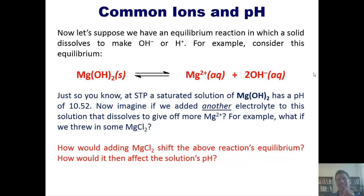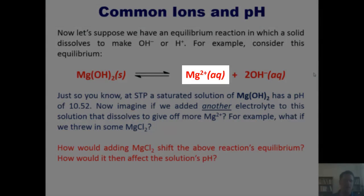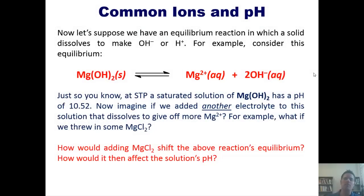Once again, magnesium chloride would dissipate to give a bunch of Mg2+, magnesium cation. That would feed back into this reaction and drive the reaction to the left. And in order to drive it to the left, what has to happen?